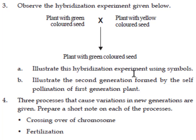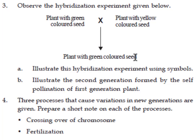The plant with green colored seed is represented as capital G capital G (GG), and the plant with yellow colored seed is represented as small g small g (gg). When hybridized, the gamete from green is capital G and from yellow is small g, giving first generation Gg — the plant with green colored seed.